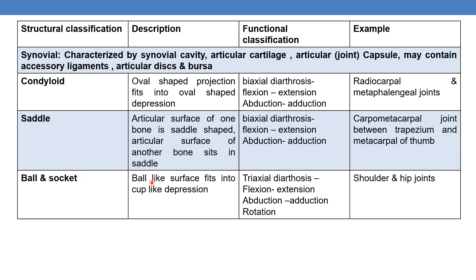The next is the ball and socket joint. Here, a ball-like surface of one bone fits into a cup-like depression of another bone. Ball and socket joints are triaxial diarthroses — they allow flexion and extension, abduction and adduction, and rotation. Saddle and condyloid joints are biaxial diarthroses, whereas ball and socket joints are triaxial. Examples of ball and socket joints are the shoulder and hip joints.